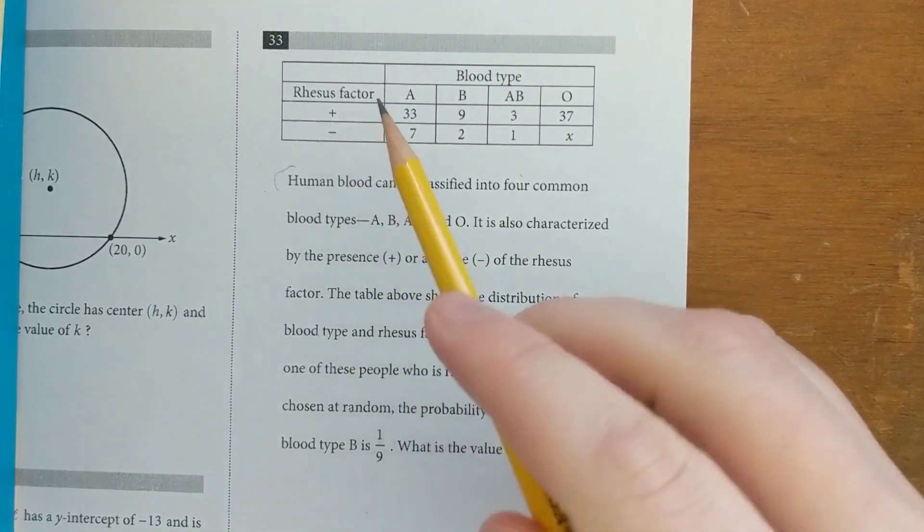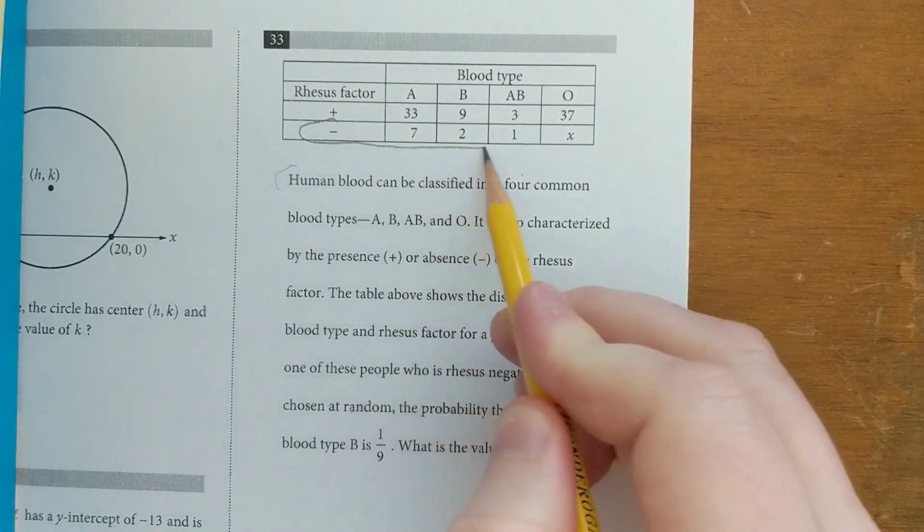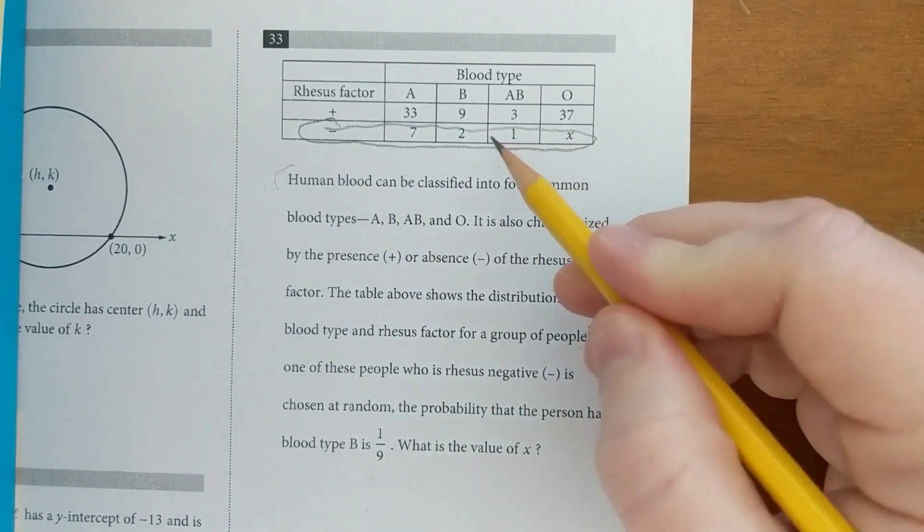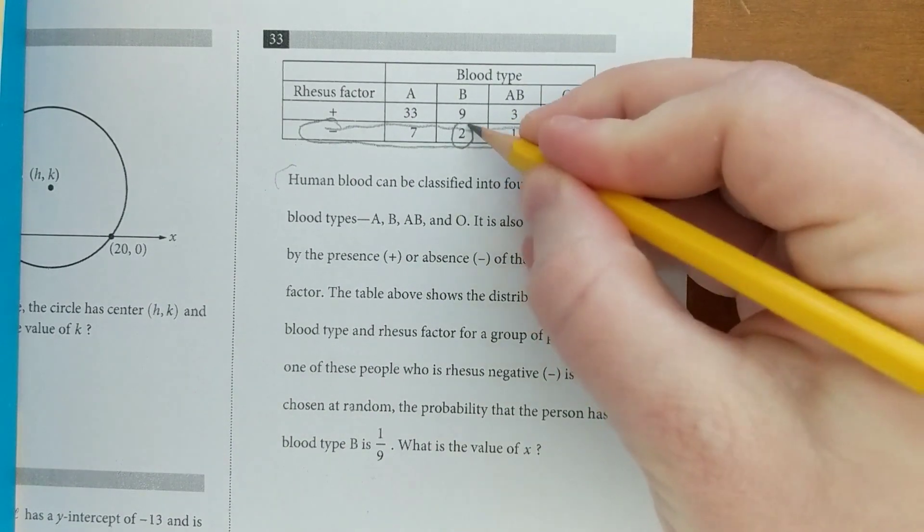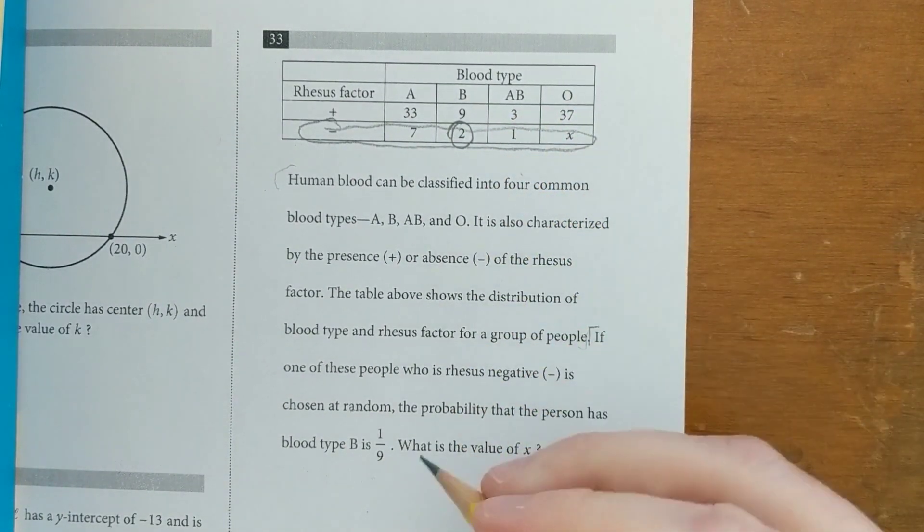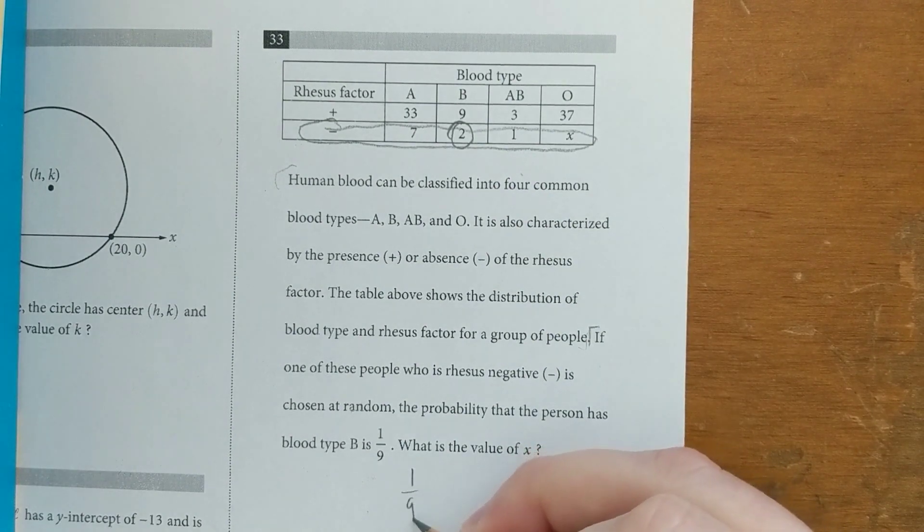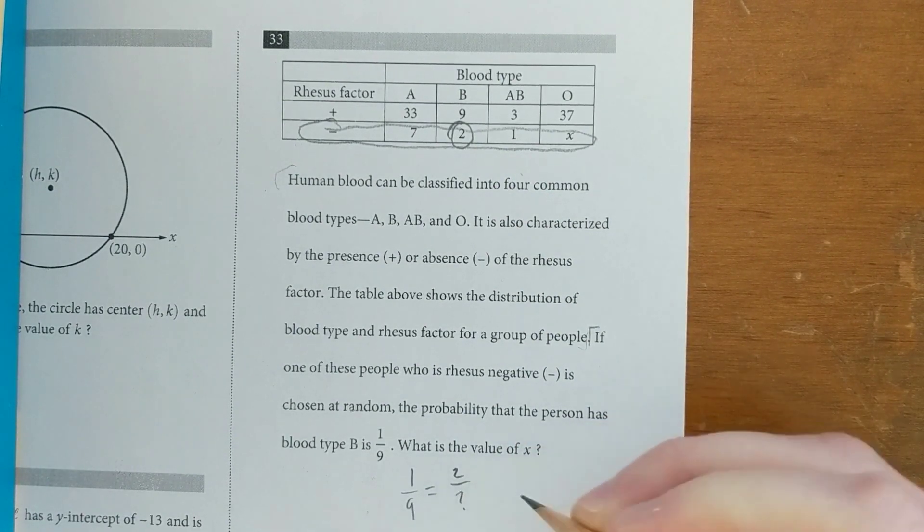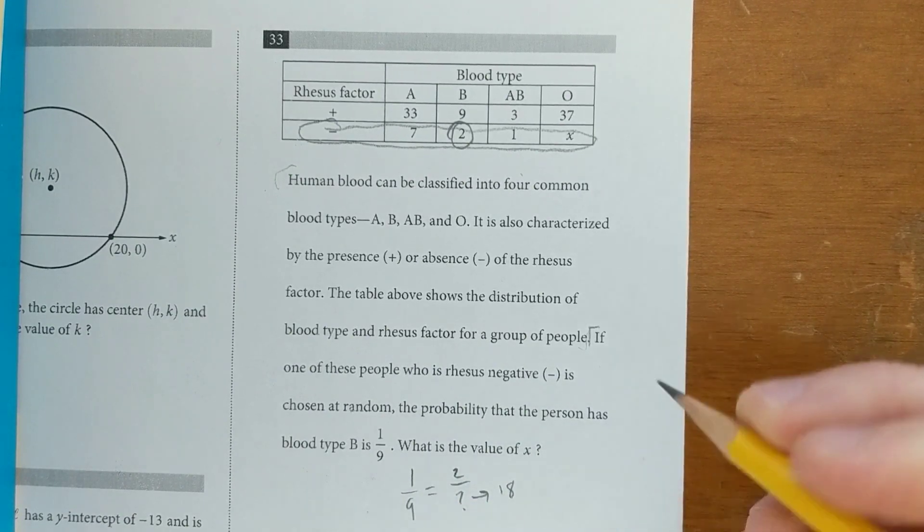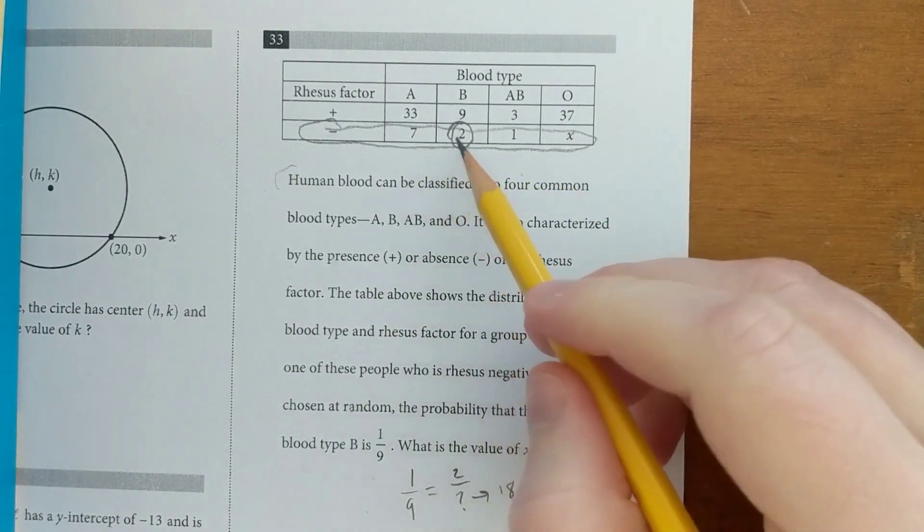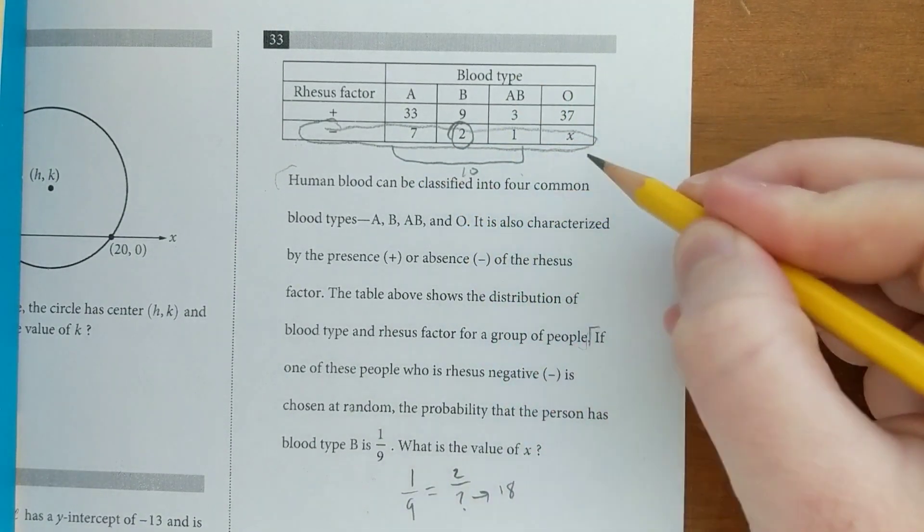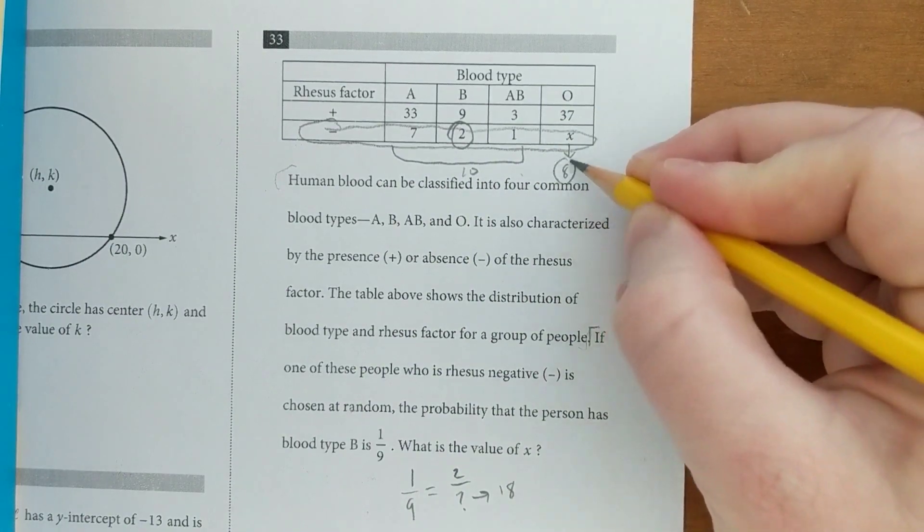So up here we are interested in this row. People have the negative Rh factor and it says that blood type B, so this one, the probability of having blood type B is 1 out of 9. So we can just set up a simple proportion: 1 out of 9 equals 2 out of something, and this must be 18 because 2 out of 18 is 1 out of 9. Now if you look at this, 7 plus 2 plus 1 is 10, and if the whole thing has to add up to 18, then X must be 8.